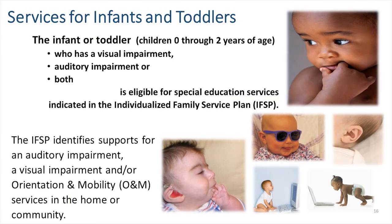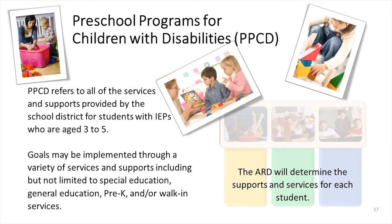According to the Individuals with Disabilities Education Improvement Act, children from birth through age 2 who have a visual or auditory impairment are eligible for special education services indicated in the Individualized Family Service Plan, or IFSP, the infant level of an IEP. Infant services and supports take place in a variety of settings. Northeast Independent School District has certified personnel with specialties in serving the youngest children who are eligible for special education supports. Preschool programs for children with disabilities include all services and supports for students with IEPs who are age 3 to 5 years old. Goals may be implemented through a variety of services and supports, including but not limited to special education, general education, pre-K, or walk-in services. The ARD will determine the services and supports for each student.